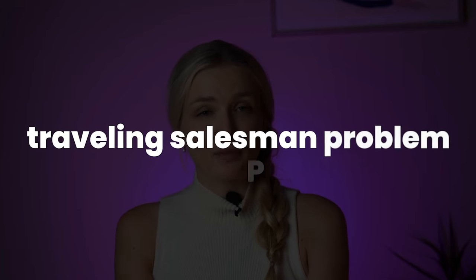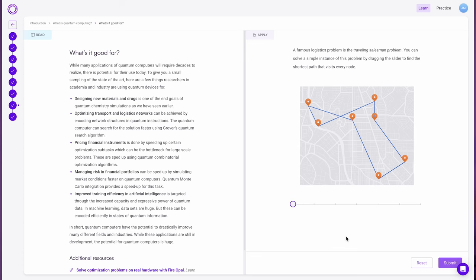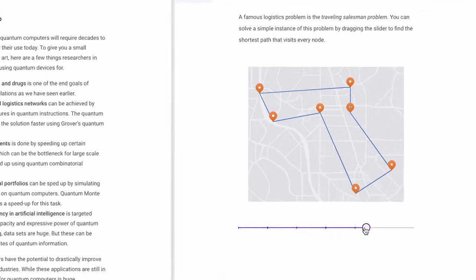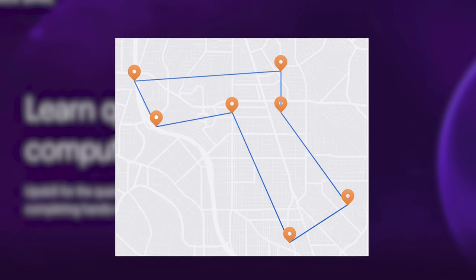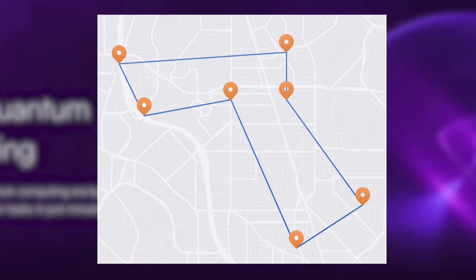The traveling salesman problem, or TSP, is a classic optimization problem in computer science and mathematics. This problem asks for the shortest possible route that visits each city exactly once and then returns to the original city. In BlackOpal here, you can drag sliders to see different cities, which is incredibly useful for understanding the complexity of TSP. But you may look at this and think, well, this sounds like a little bit of a simple problem.